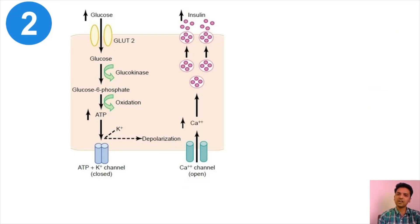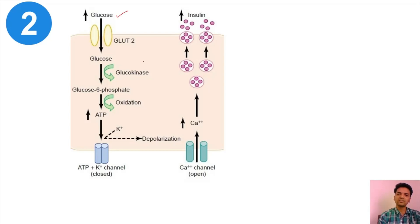To understand the second class of drug, we need to understand the mechanism of insulin secretion, which I have described in a previous video. Once glucose is absorbed from the GIT, blood glucose concentration increases — this is postprandial hyperglycemia. This glucose gains entry into the beta cell in the pancreas via a receptor called GLUT2.